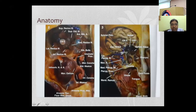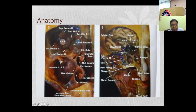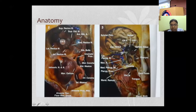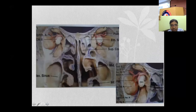The maxillary sinus is a box-like structure. Superiorly we have the orbit, posteriorly the pterygopalatine and infratemporal fossa, medially the pterygoid process, and inferiorly the alveolar process. The inferior orbital nerve is important as it may be involved. Medially we have the ethmoid sinus and nasal cavity, and posteriorly the choanae, where tumors can extend into the pterygoid muscles.